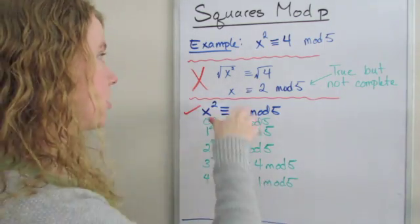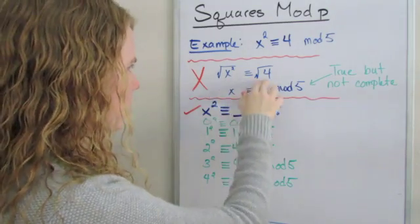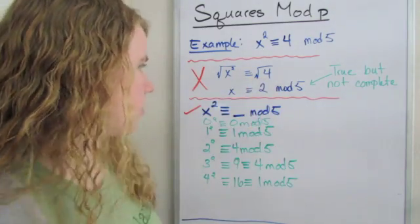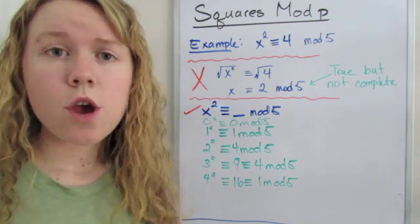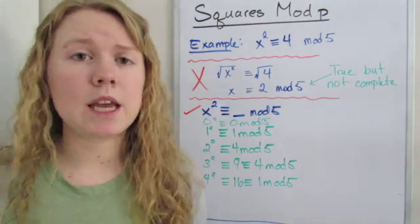You take the square root of x squared, square root of 4, and you get that x ≡ 2 mod 5. And while that is correct, it is not a complete answer.